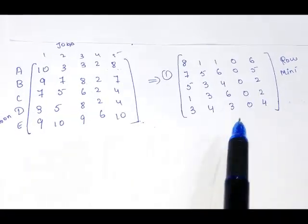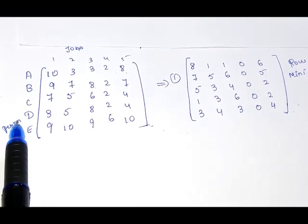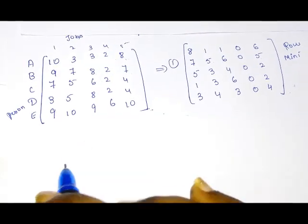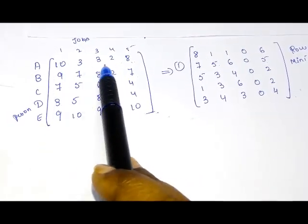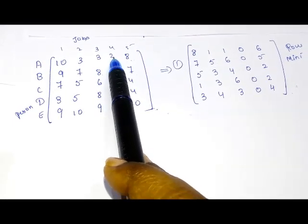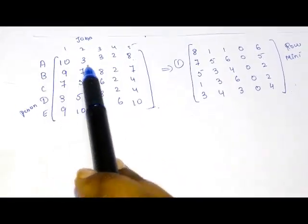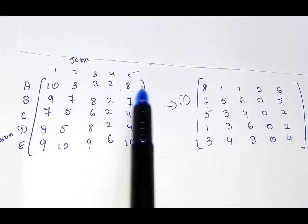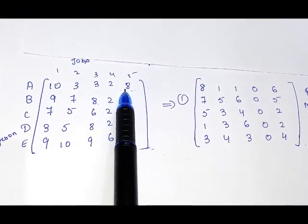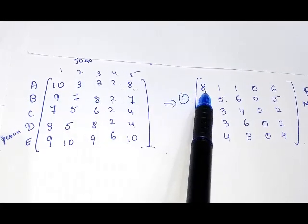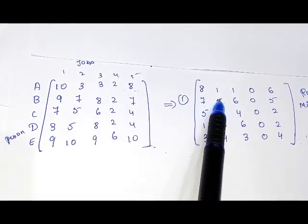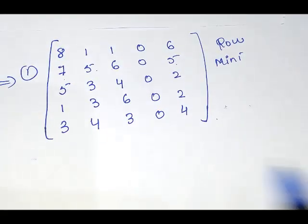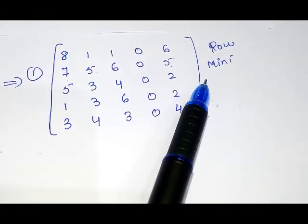Let me recap the row minimization. In the given matrix we have different persons, different jobs, and different costs. For row minimization, in each entire row we select the minimum cost and subtract it from every other element in that row. The minimum in the first row was 2, so we subtracted 2: 10 minus 2 is 8, 3 minus 2 is 1, 3 minus 2 is 1, 2 minus 2 is 0, and 8 minus 2 is 6. This matrix is what we obtained from row minimization — that is our first step.